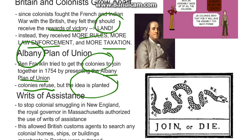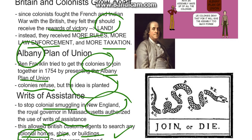Writs of Assistance. In order to stop colonial smuggling, especially in New England, the royal governor in Massachusetts authorized the use of something called writs of assistance. Basically, this allowed British customs agents to search colonial homes, ships, or buildings to see if colonists were smuggling. Merchants in Boston were outraged, and colonists felt that their rights were being invaded.